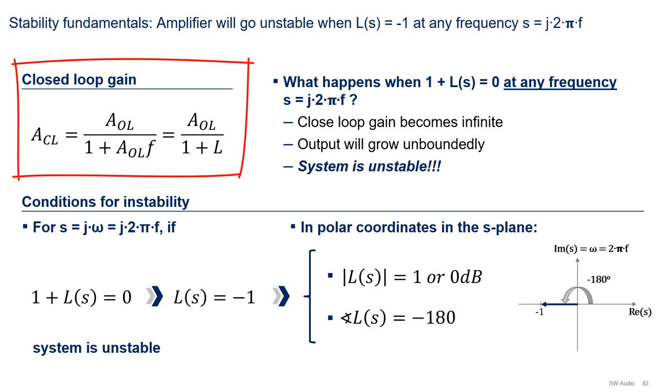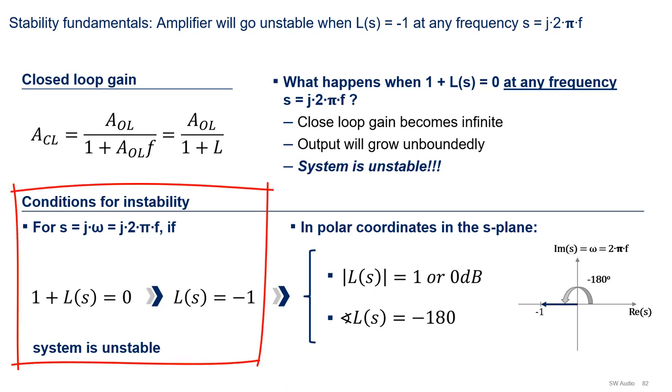Well, the closed-loop gain becomes infinite. The amplifier output will grow unboundedly. Your amplifier will explode and go to amplifier heaven. Well, maybe, or maybe not. But for sure, it will be unstable. As a result, the condition to avoid for stability is L equal -1 for any frequency f.